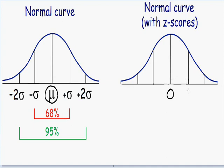I'm going to put a positive 1 one standard deviation above the average. The distance of two standard deviations above the average is going to have a z-score of 2, so I'll draw a positive 2. The same concept applies to the left, except we use negative numbers. One standard deviation to the left is a negative 1 z-score, and two standard deviations below is a negative 2 z-score.